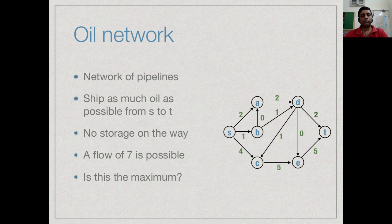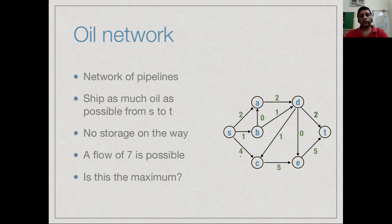The green quantity represents one possible flow. I sent two units from s to a, one from s to b, four from s to c — these are within capacity since I could have sent 3, 3, and 4 but sent 2, 1, and 4. In total, 7 units flow out of s and 7 units come into t, so I am able to flow 7 units from s to t in this network.